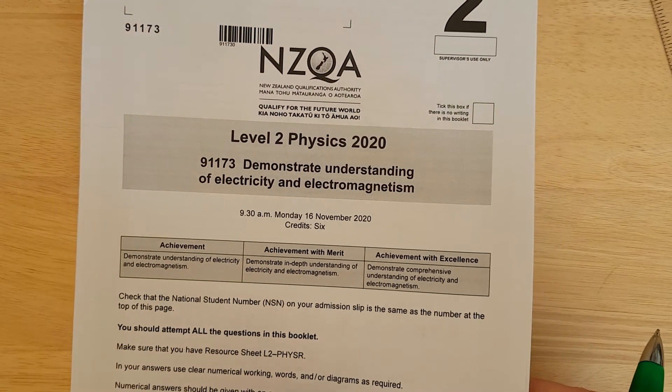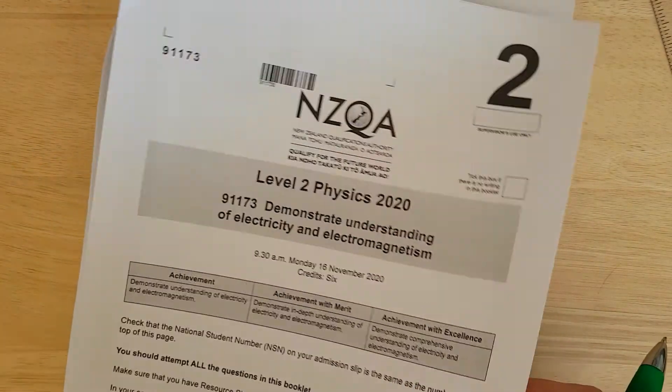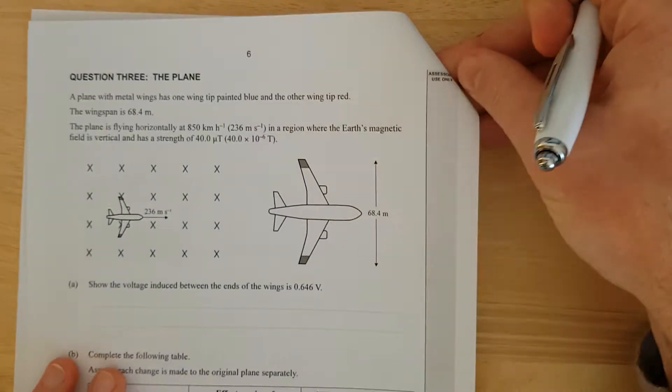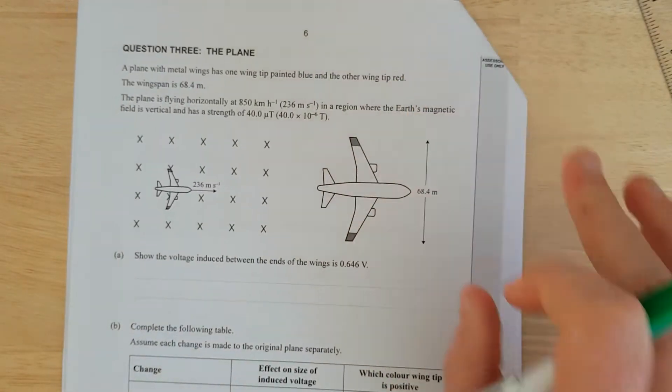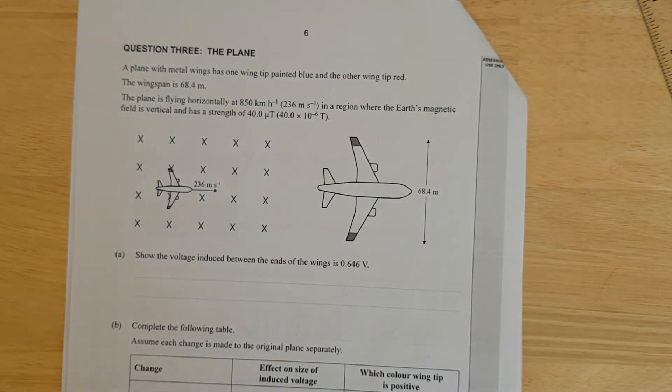This is question 3 of the 2020 level 2 electricity exam. A plane with metal wings has one tip painted blue and the other painted red. Wingspan is 68.4 meters. The plane is flying horizontally at 850 km per hour in a region where the Earth's magnetic field is vertical and has a strength of 40 micro tesla.